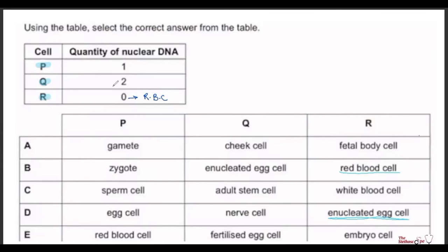Now for P: P has half the nuclear DNA of Q, so P is haploid (n) and Q is diploid (2n). The haploid chromosome number is found in gametes, while the diploid number — double the DNA — is found in body cells. So P is a gamete, which is an umbrella term covering sperm cells and egg cells.